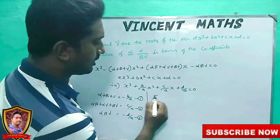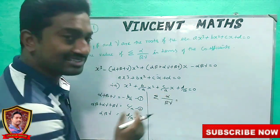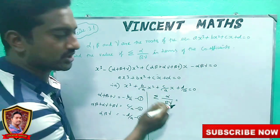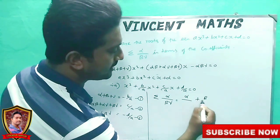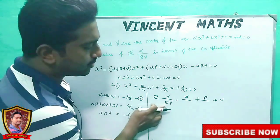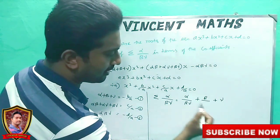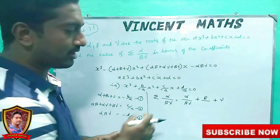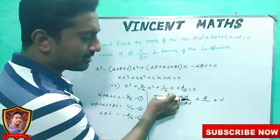Now if you compare the summation of alpha, beta, gamma — one at a time: alpha plus beta plus gamma. Two at a time: alpha·beta plus beta·gamma plus alpha·gamma. That's what you do when comparing the summation.